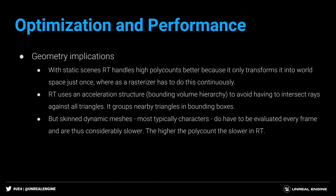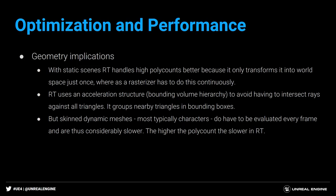For poly counts: with static scenes, ray tracing actually handles high polygon counts better than a rasterizer. Ray tracing uses an acceleration structure — a bounding box hierarchy of the object — to avoid intersecting rays against all triangles. For rasterization, the 3D model has to rasterize continuously frame by frame. In ray tracing, we only build the acceleration structure once, so high poly static content is potentially slightly faster.